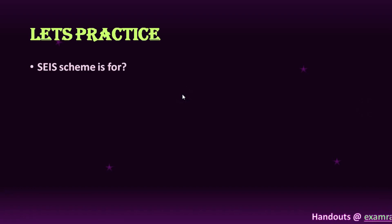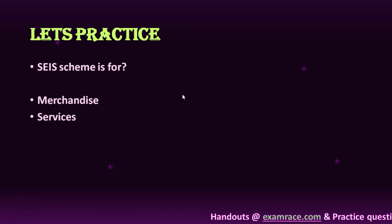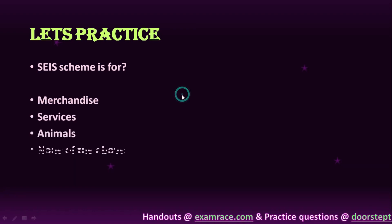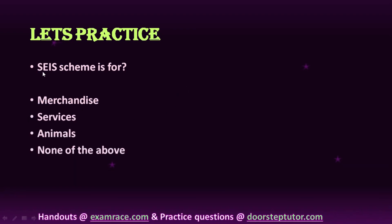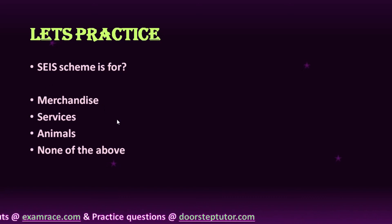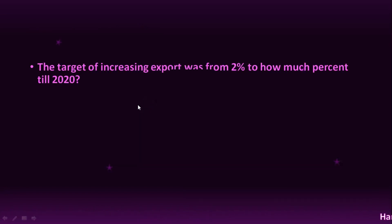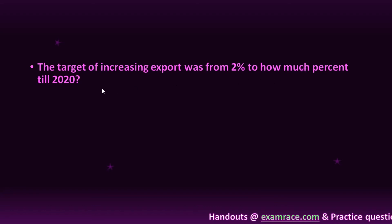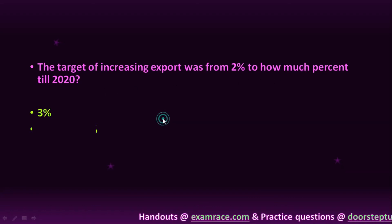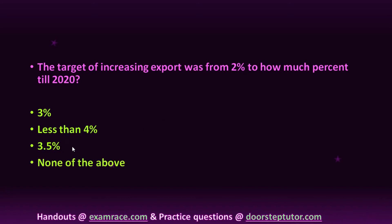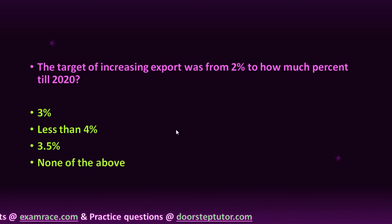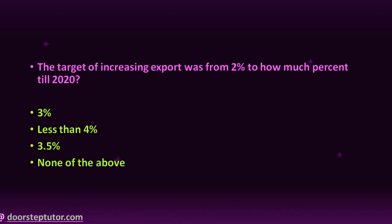Let us practice some important questions. The SEIS scheme is for: merchandise, services, animals, or none of these? The answer is services — SEIS, Service Exports from India Scheme, is for services. The next question: the target of increasing exports was from 2% to what percentage till 2020? We all discussed that it was 3.5% till 2020. The correct answer is option C. This was all for today. Hope you enjoyed this lecture. Thank you for your time.